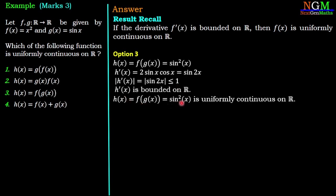So h(x) = sin²x option number three is uniformly continuous on R.